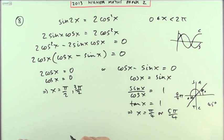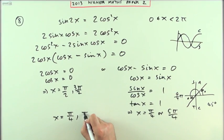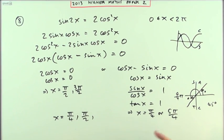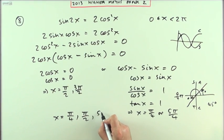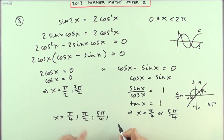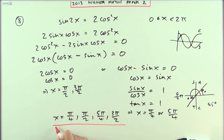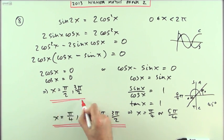Putting it all together in numerical order: pi upon 4, pi upon 2, 5 pi upon 4 comes before this, 5 pi upon 4, and then 3 pi upon 2. And that's all there was to it.